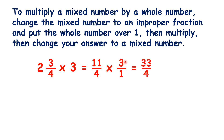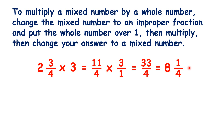So we multiply the 11 by three, but keep the four as it is. That gives us 33 over four, which we can change back into a mixed number, because 33 divided by four is eight, remainder one, so our answer is eight and a quarter.